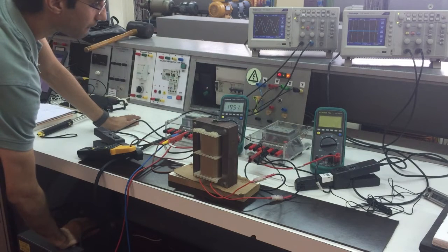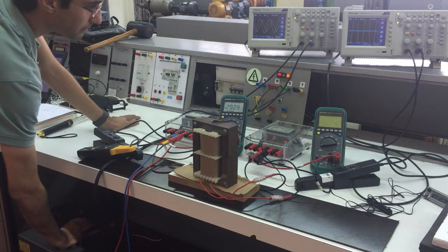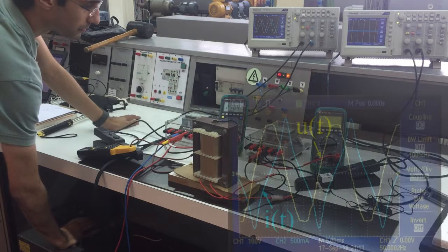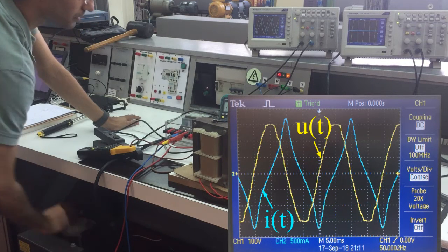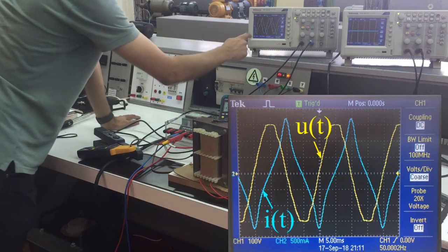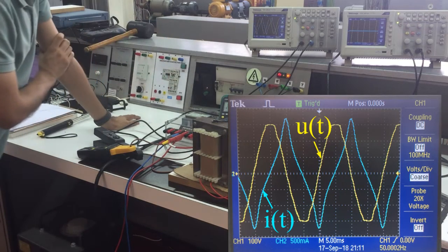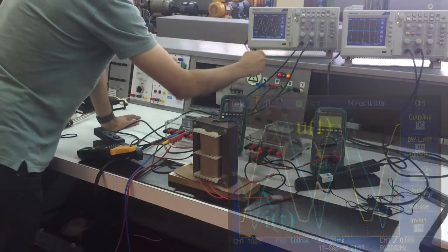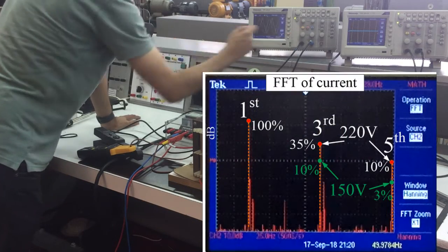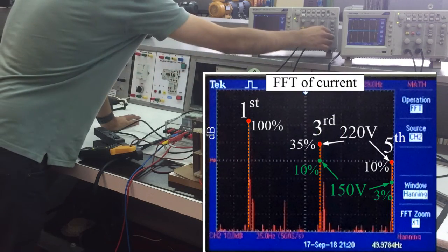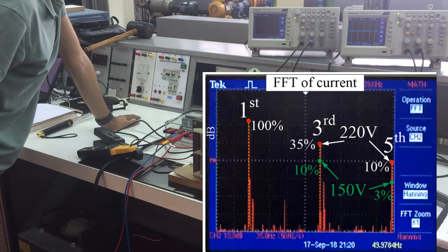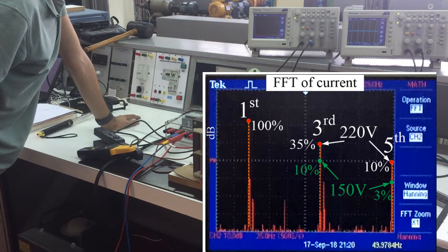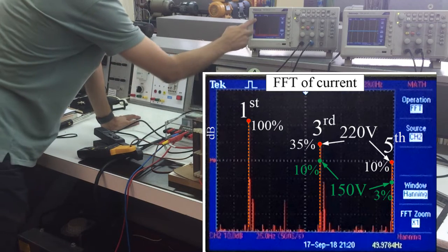Finally, go to the 220 volts and look again to the current. You can see now that the current is clearly not sinusoidal. If you see its third and fifth harmonics, you can see that they are high compared to the fundamental one. This means that you are clearly in the saturation zone.